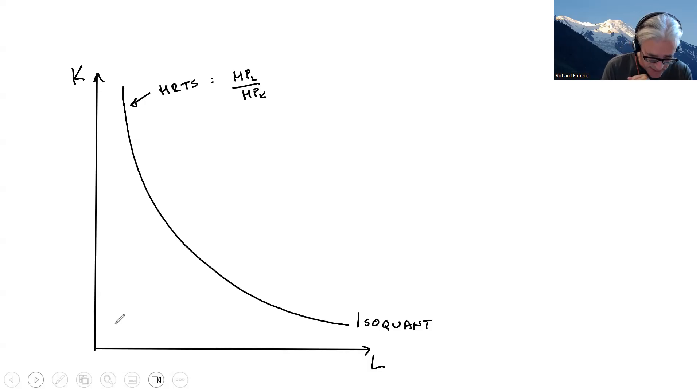So the question now is where should the firm produce? Well, we know that there's an isocost. It might look something like this. So this is an isocost and its slope will be given by wages over the rental rate of capital, or minus, but we're looking at the absolute value as we're comparing. You want to have them in the same units.